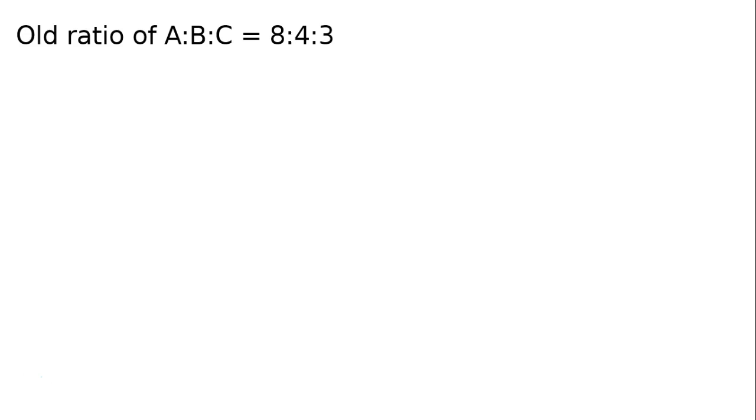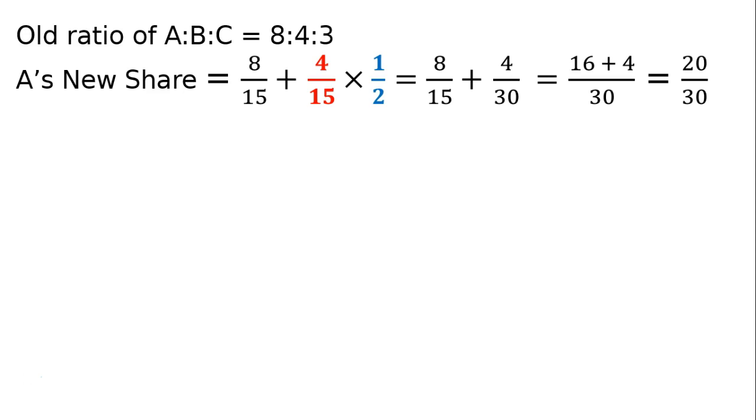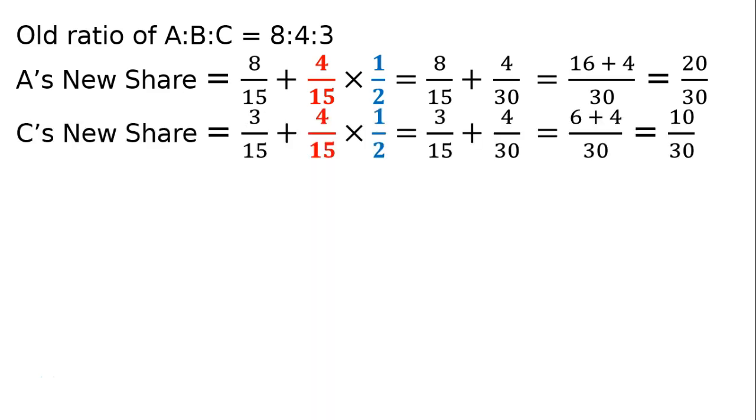Old ratio of A:B:C = 8:4:3. Now, what is A's new share? Old share is 8/15, plus B's share 4/15 split half-half. B had 4/15, A and C take half each. So 4/15 divided equally between A and C.